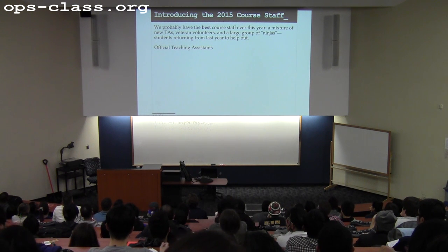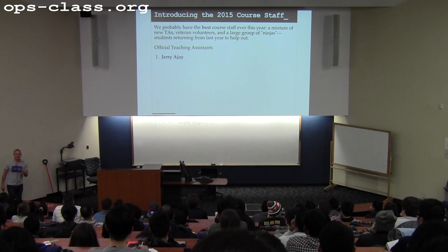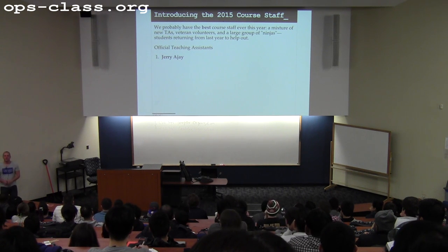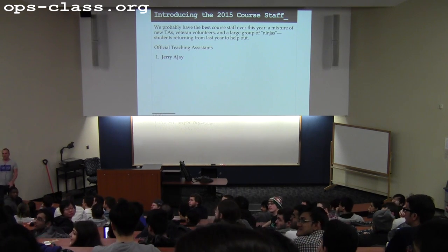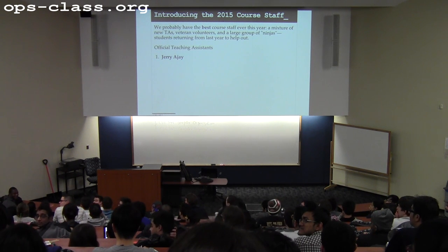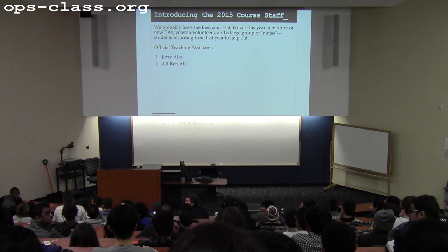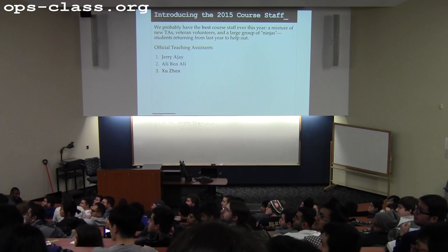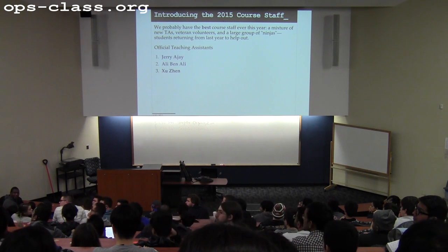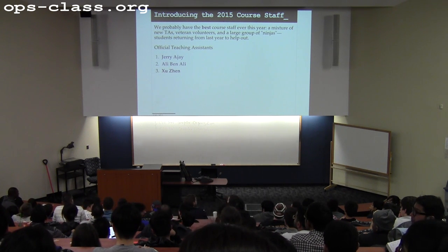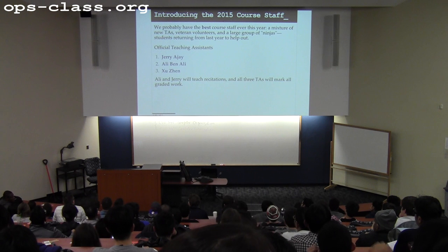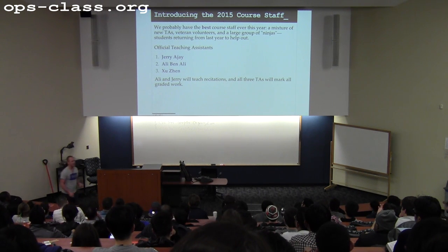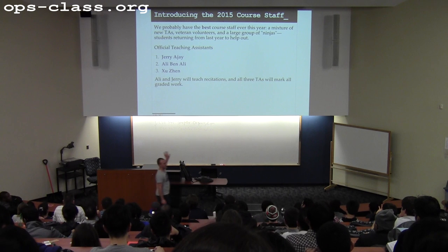You can divide the course staff roughly into two groups. We have official teaching assistants: Jerry's in the back, Ali is another, and Zhu — I'm not sure if he's here. So these are our three official teaching assistants. They're going to grade things and help in office hours — that's their primary responsibility.